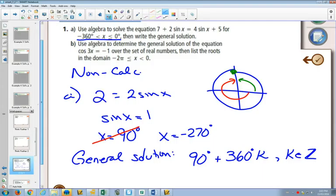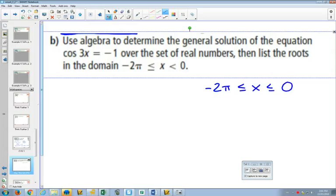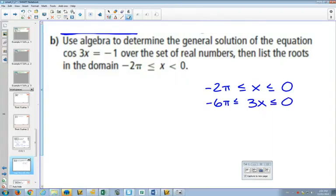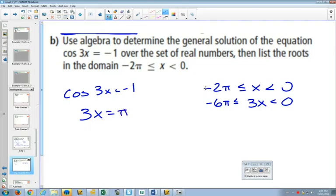B is similar, but now we're dealing in radians. And in B, let's start a new page here. In B, do you see that we also have a multi-revolution question? We've got a cos 3x. So if our domain for x is between negative 2 pi and 0, where will 3x appear? Between negative 6 pi and 0. There's no equal on the 0 part. So we start.